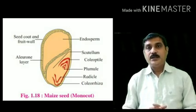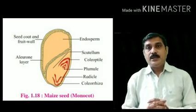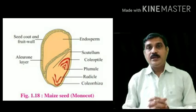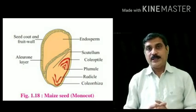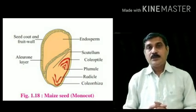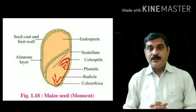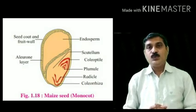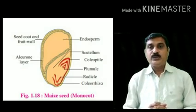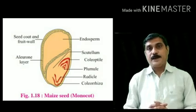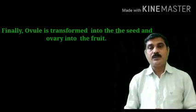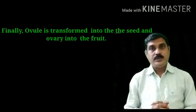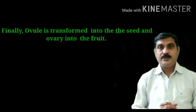Inside the monocot embryo, the plumule is protected by a covering known as the coleoptile, while the radicle is also protected by a covering known as the coleorhiza. This is all about the development of the embryo in angiospermic plants.